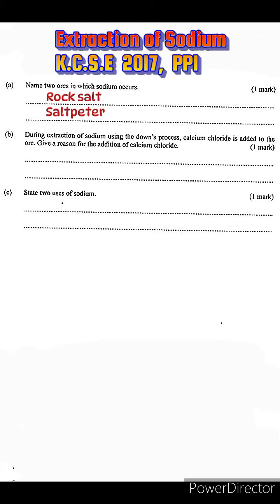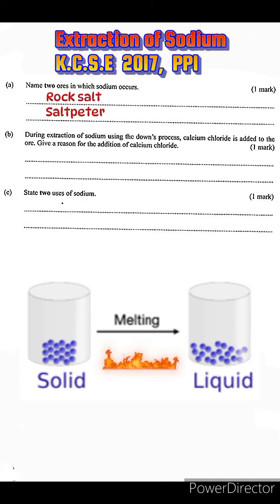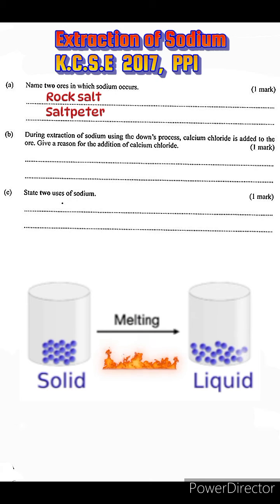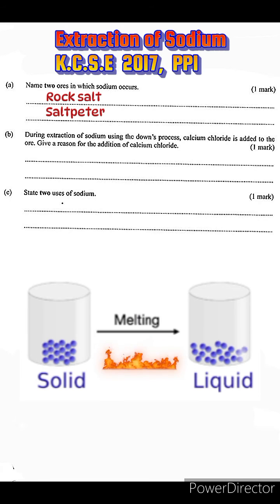Coming back to our point: sodium chloride needs to be in molten state, which means that heating needs to take place until it melts. To put this into perspective, sodium chloride has a melting point of 800 degrees Celsius — quite high — meaning that huge quantities of electricity will be used to ensure that the sodium chloride melts and continues to stay molten.